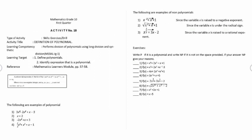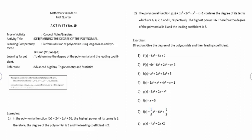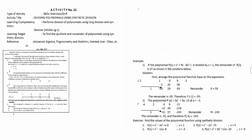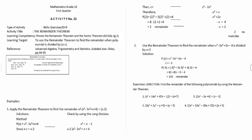Activity number 18: definition of polynomial. Activity number 19: determining the degree of the polynomial. Activity number 20: dividing polynomials. Activity number 21: dividing polynomials using synthetic division. Activity number 22: the remainder theorem.